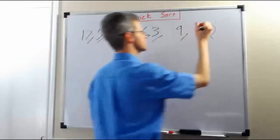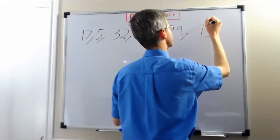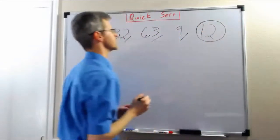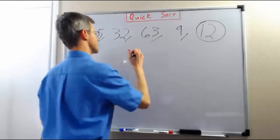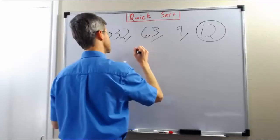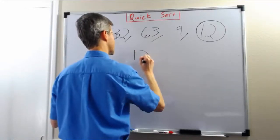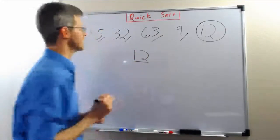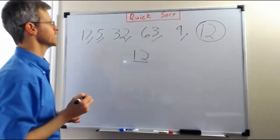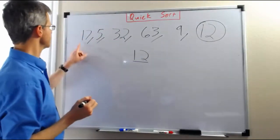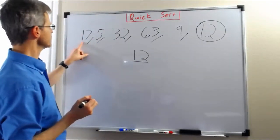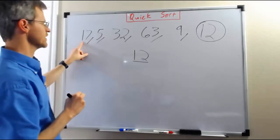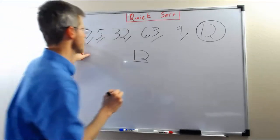The way that we partition is we pick a pivot element. We're going to pick the rightmost element and write that pivot element down here in the middle and underline it so we know it was the pivot before. Then we're going to go through the list and see if other elements are less than the pivot or greater than the pivot.